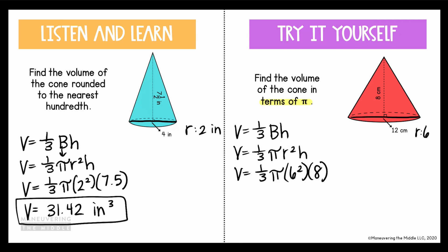And like I said, we're going to multiply everything except for π. So I'm going to multiply 1/3 times 6² times 8. Multiplying those three values gives me 96, and then bring down π into your answer. So in terms of π, the volume is 96π centimeters cubed.